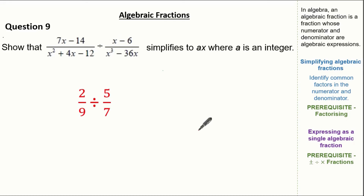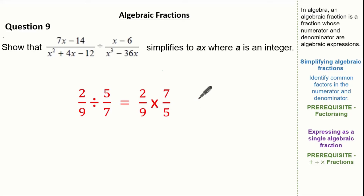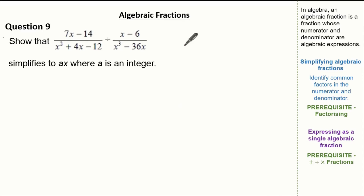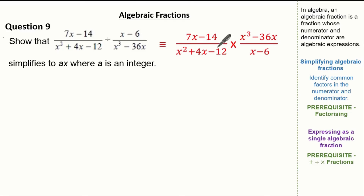When dividing fractions, for example 2 over 9 divided by 5 over 7, we reciprocate the second fraction and multiply, giving 2 over 9 multiplied by 7 over 5, which is 14 over 45. Applying the same method to our algebraic fractions: (7x minus 14) over (x squared plus 4x minus 12) multiplied by (x cubed minus 36x) over (x minus 6). Let's multiply our numerators and denominators.